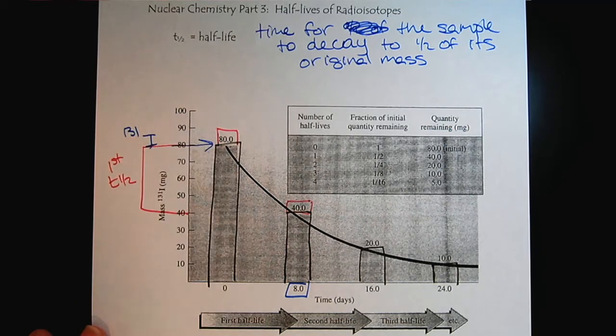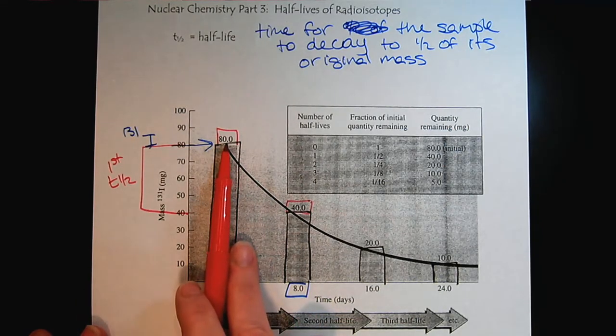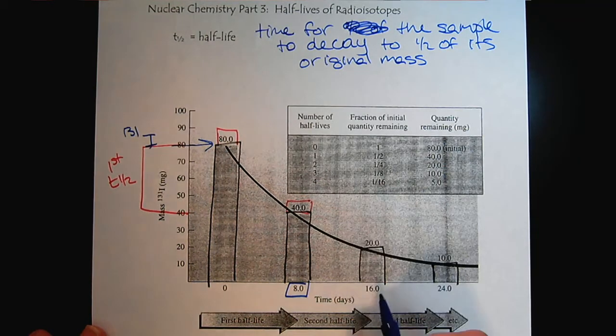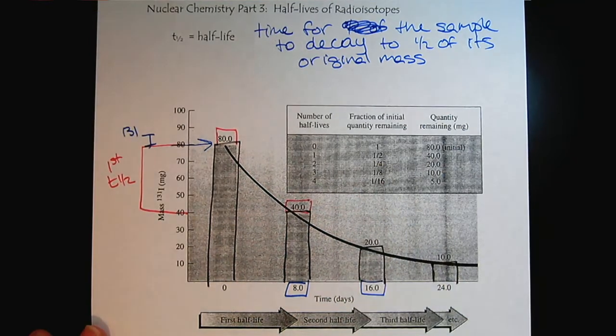So there's the first half-life. It took us eight days, right, the 80 milligram sample, it took it eight days to get to 40 milligrams. Now, if we wait another eight days, now we're down to 20 milligrams.